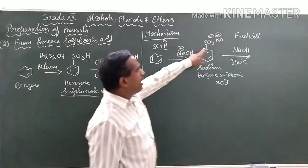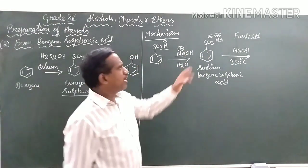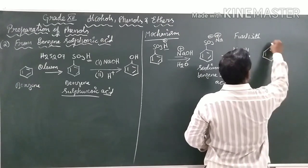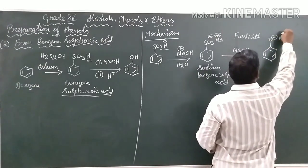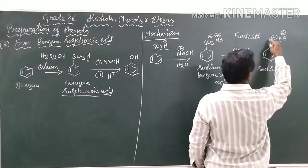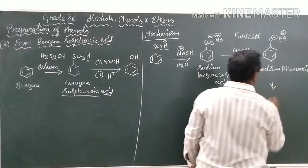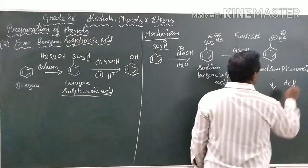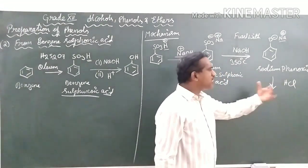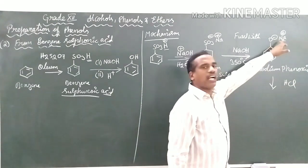Fused with means reacted with sodium hydroxide at a very high temperature of 350°C. Then what happens is the SO₃ group is replaced with an oxide — O⁻ and Na⁺ — forming what we call sodium phenoxide. The product is sodium phenoxide. We then react this sodium phenoxide with HCl, which provides H⁺ ions that substitute the sodium.